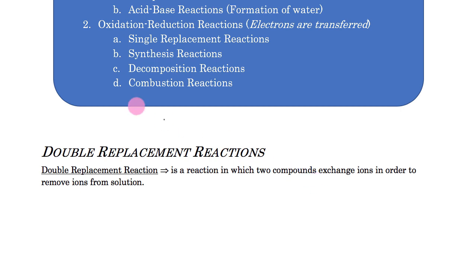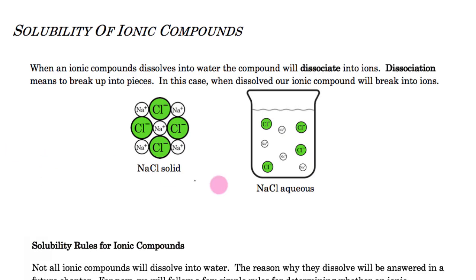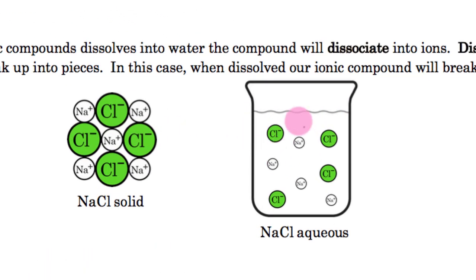Since we're talking about ions reacting together, we need to talk about the solubility of ionic compounds. Ionic compounds are made up of ions grouped together based on their positive and negative charge. In the solid state they don't move around — they're stuck. There are two ways to get ions to move: melt them into a liquid, or dissolve them in water. When dissolved, those ions dissociate — they break up into their component ions.